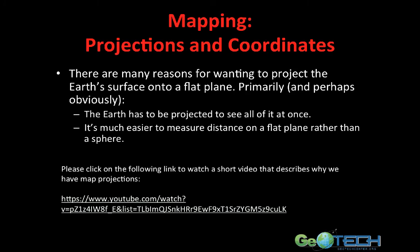Now, of course, there's a big question with mapping: how do you take this world that we live on, this rather large three-dimensional sphere, and project it on a two-dimensional plane? There are many reasons for wanting to project the Earth's surface onto a flat plane — primarily, the Earth has to be projected to see all of it at once, and it's much easier to measure distance on a flat plane rather than on a sphere. As we try to project the world onto a two-dimensional plane, there are going to be good projections and not-so-good projections. Some will lead to a fair amount of distortion, and some will minimize distortion to a certain extent.